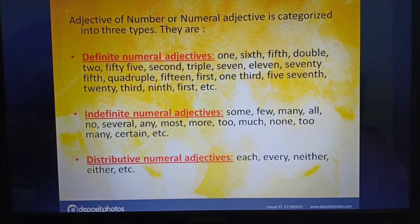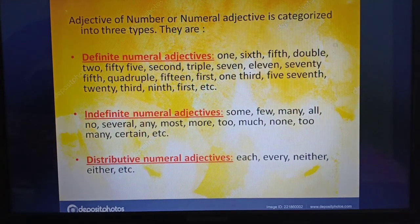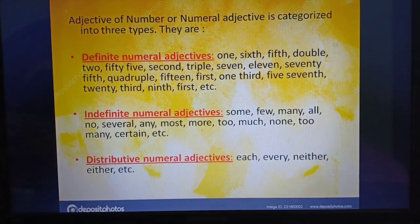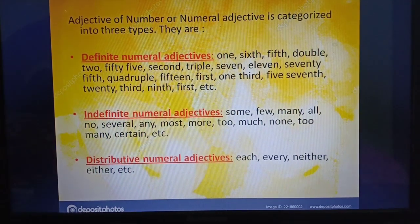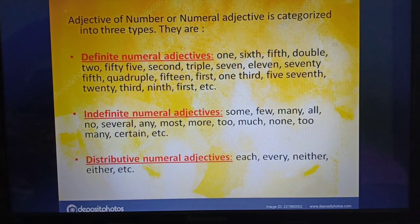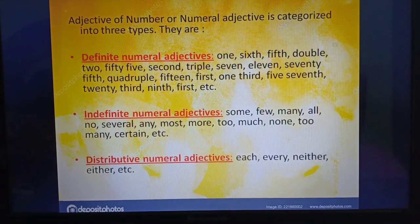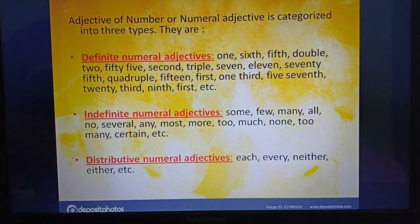Examples of definite numeral adjectives: 1, 6, 5, 2, 55, triple, 7, 11, 70, quadruple, 15, 1st, 3rd, 5th, 7th, 20, 9th, etc. Indefinite numeral adjectives examples: some, few, many, all, no, several, any, most, more, too, much, none, too many, certain, etc. And distributive numeral adjectives examples: each, every, neither, either, etc.